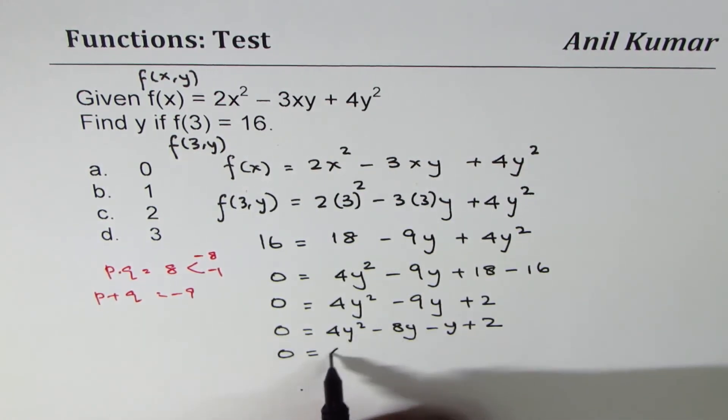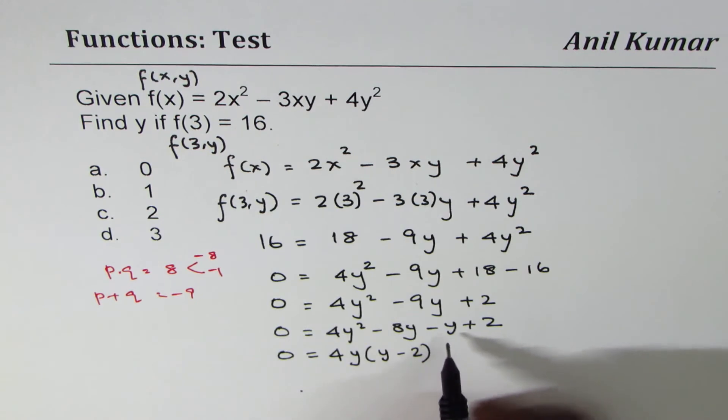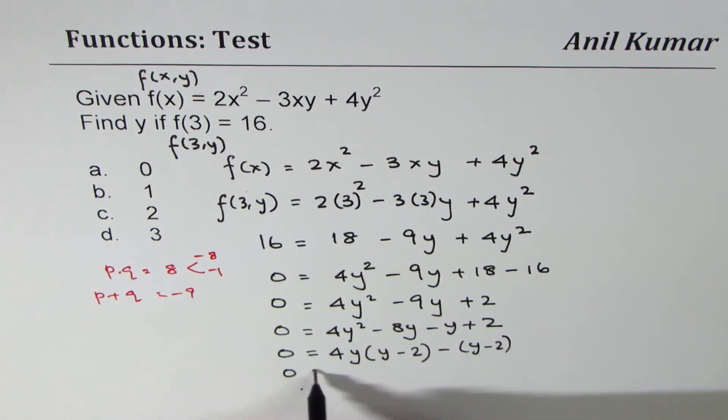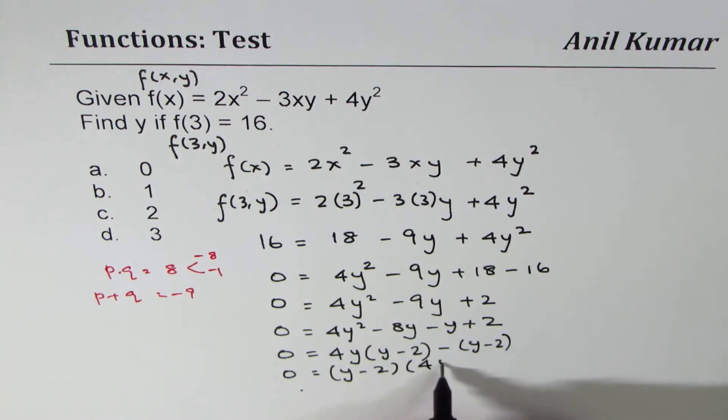We will write this as 0 = 4y² - 8y - y + 2. We can take 4y common, so we get (y - 2), and here we can take negative common, so we get (y - 2). That gives you the factored form: (y - 2)(4y - 1).